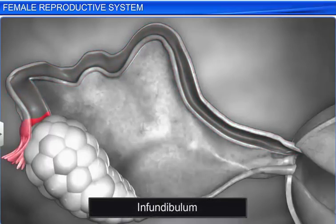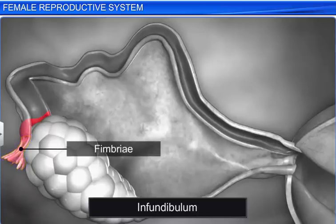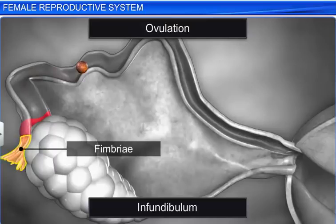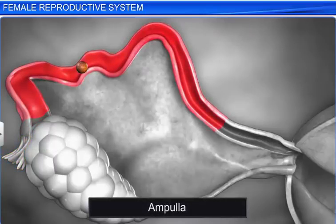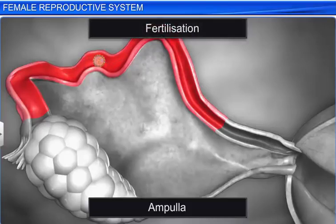The infundibulum is a dilated funnel close to the ovary, and its edges are surrounded by finger-like projections called the fimbriae. They help collect and push the ovum into the oviduct after ovulation. The ampulla is the swollen and curved part behind the infundibulum. The fertilization of the ovum takes place in this part.